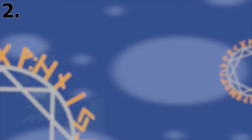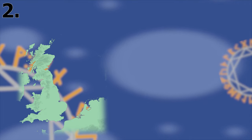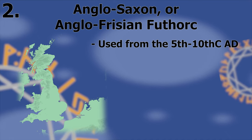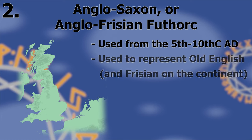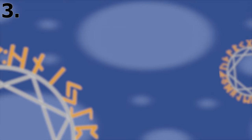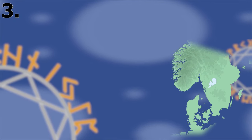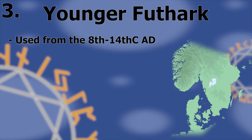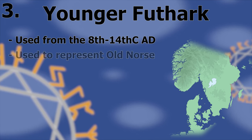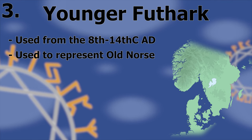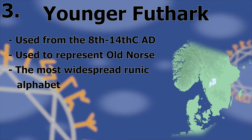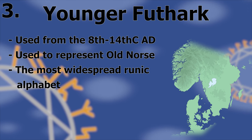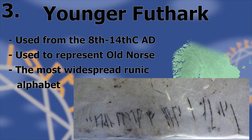Rune usage spread westward in the 5th century to Britain, where the Elder Futhark became the Anglo-Saxon or Anglo-Frisian Futhork, in use until around the 10th century AD, to represent various dialects of Old English. Back on the continent, in Scandinavia, the Elder Futhark slowly evolved into the Younger Futhark, in use from around the 8th century until the 14th century AD, used to represent Old Norse. This is by far the most widespread runic alphabet — thousands of inscriptions can be found in Scandinavia alone, and its use had spread as far afield as Constantinople. These runes are even carved into the Hagia Sophia.